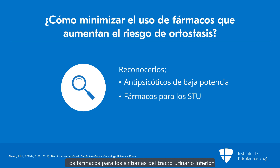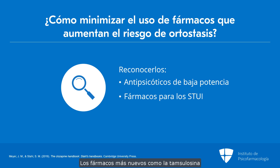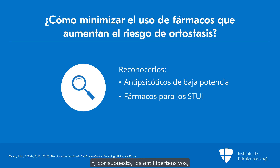Medications for lower urinary tract symptoms are also strong alpha-1 antagonists, especially prazosin and terazosin. The newer medications like tamsulosin are not as much of an offender. And of course, antihypertensives — that's their purpose, to lower blood pressure.